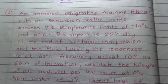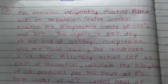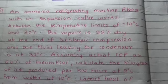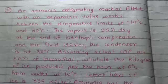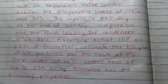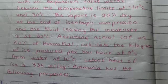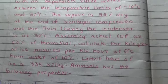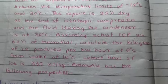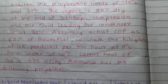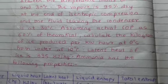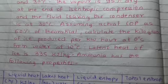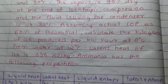The vapor is 95% dry at the end of isentropic compression and the fluid leaving the condenser is at 30 degrees Celsius. Assuming actual COP as 60% of theoretical, calculate the kilograms of ice produced per kilowatt hour at 0 degrees Celsius from water at 10 degrees Celsius. Latent heat of ice is 335 kilojoules per kilogram.